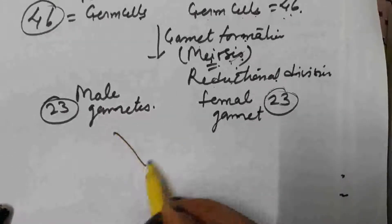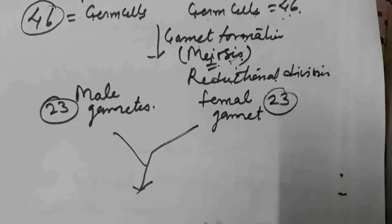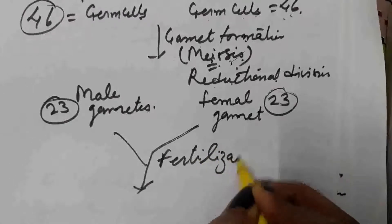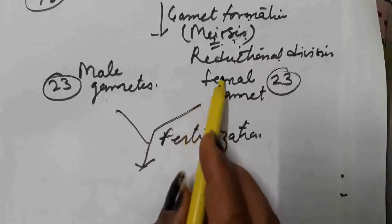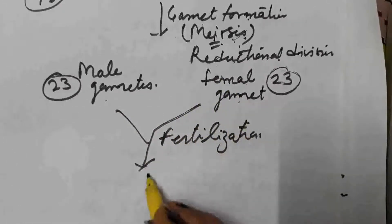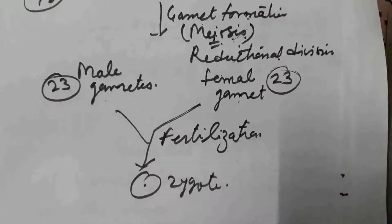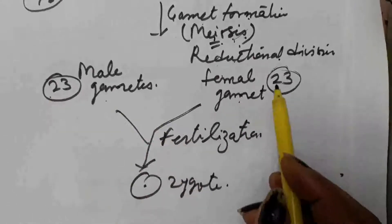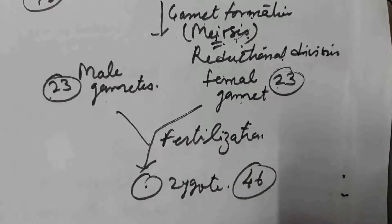Now, fusion of male and female gametes takes place. The process is known as fertilization. When the male gamete fuses with the female gamete, a single cell called a zygote is produced. Inside the zygote, 23 chromosomes come from the male gametes and 23 come from the female gametes, so in the zygote 46 chromosomes are present.